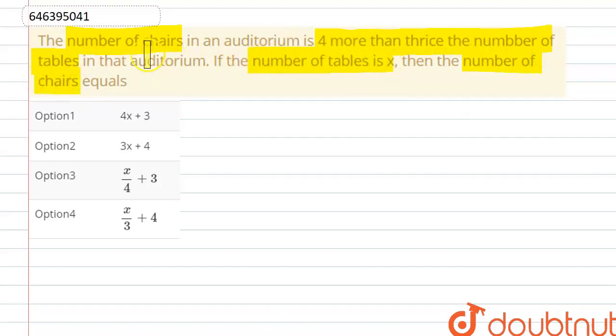We're given the number of tables and the number of chairs relation with number of tables. We have to find out number of chairs. In our question, number of tables is given as x, and we have said that thrice the number of tables.